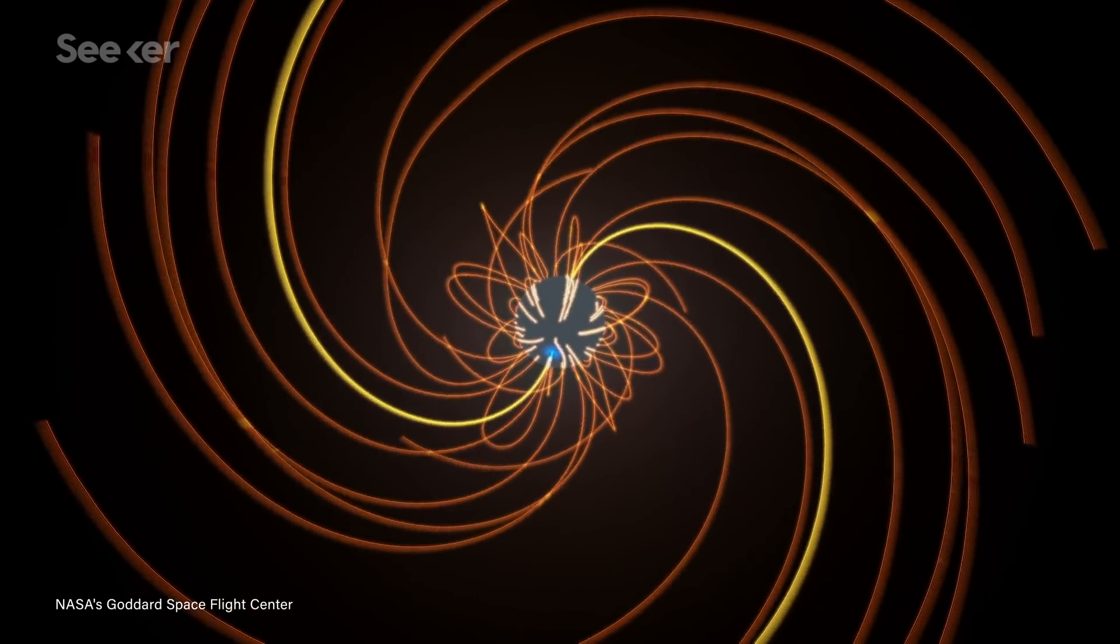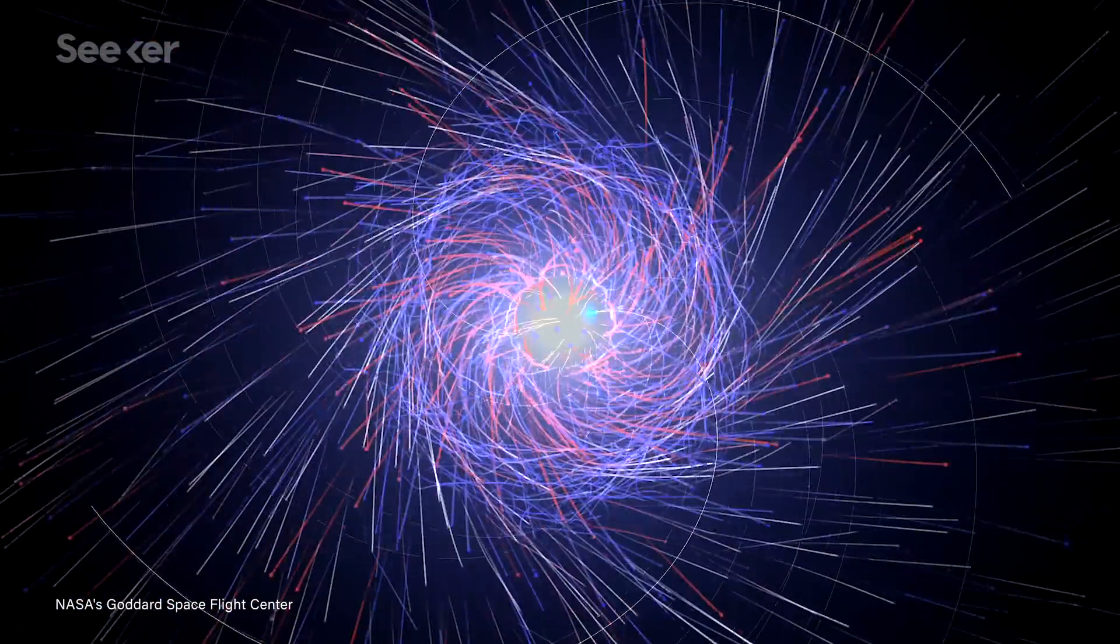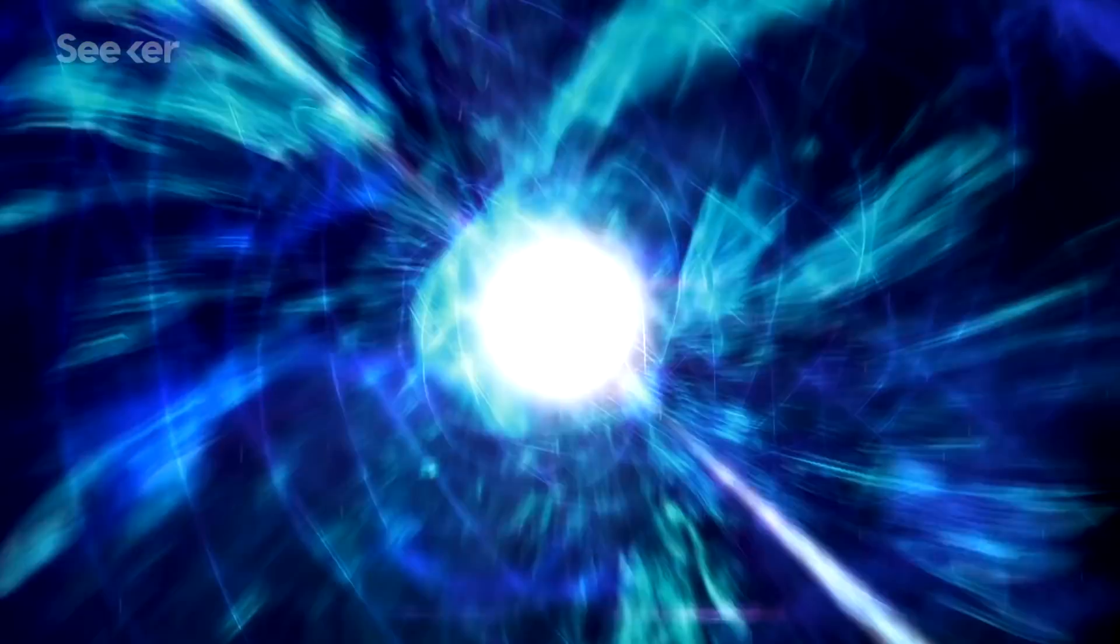That electron-photon energy interaction is something called inverse-compton scattering. And thanks to evidence from these new observations, scientists now have a pretty strong idea that this could be what gives some of these GRB events their extreme energy.